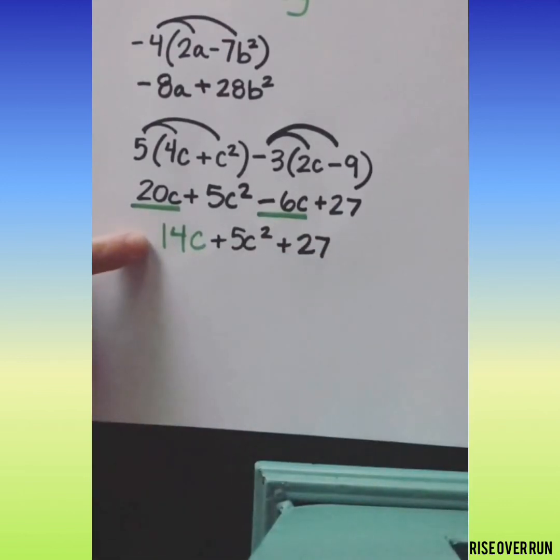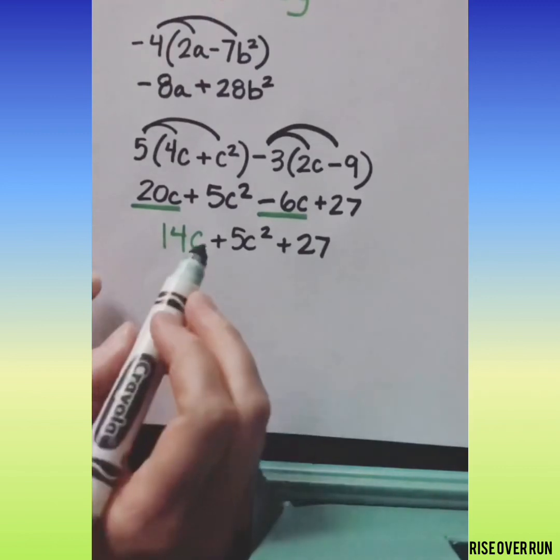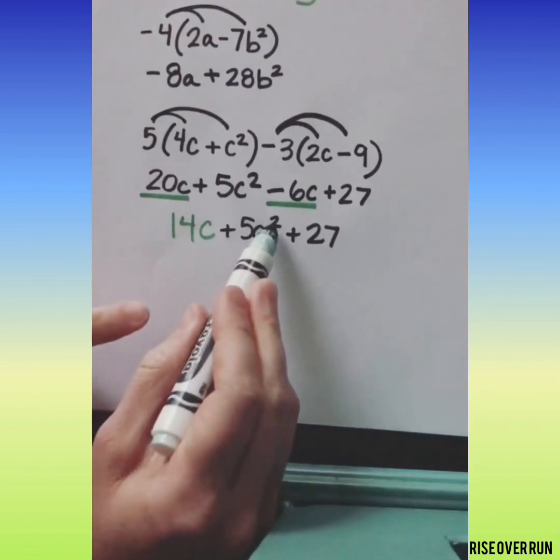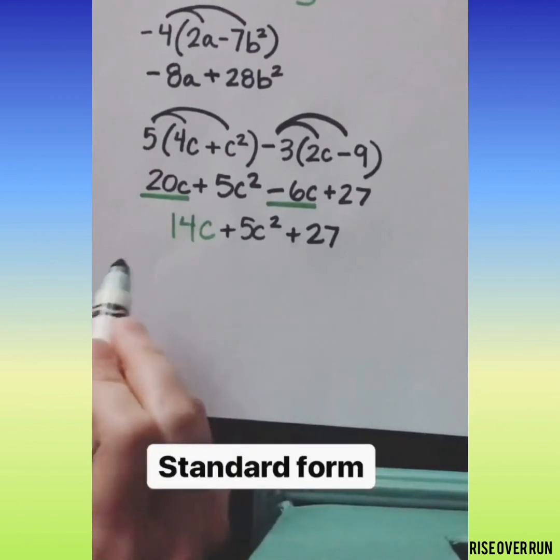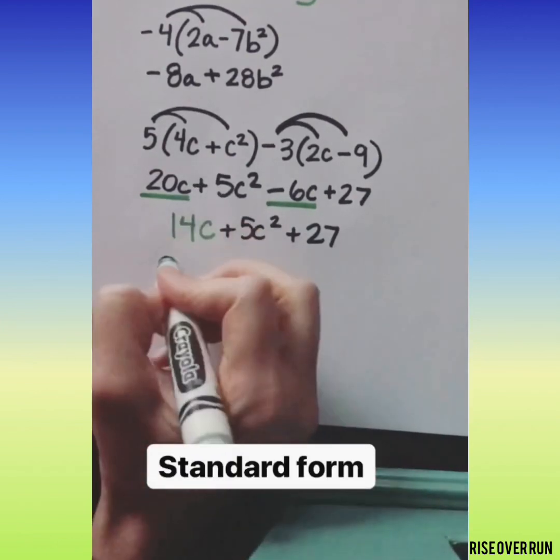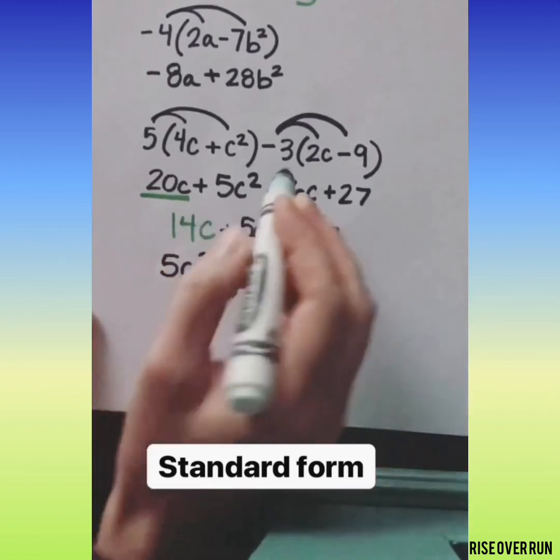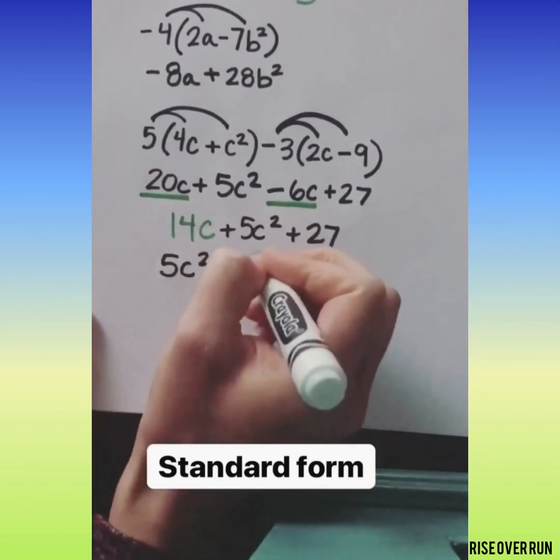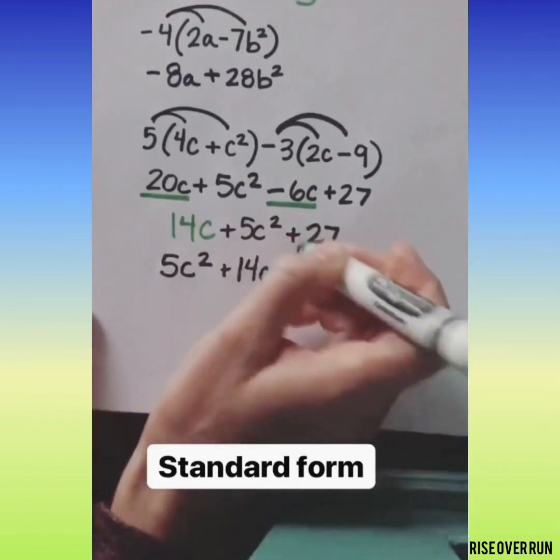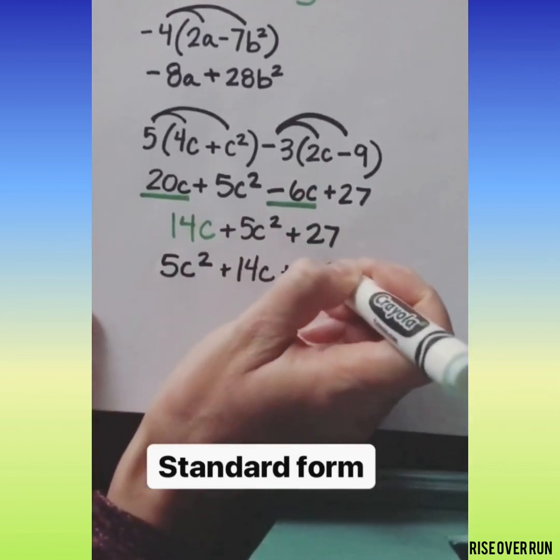Now this answer is technically correct but it's not written in standard form. Standard form says to put the highest exponent terms first. So let's move this one to the front. The next highest would be 14c because that exponent is 1, and then we have our constant at the end.